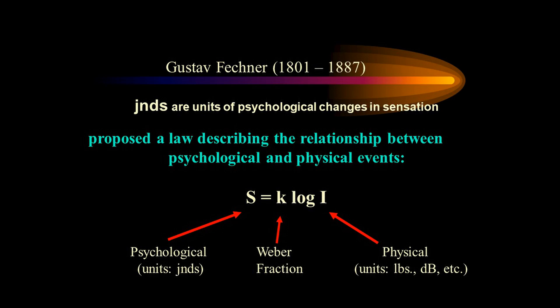S is psychological sensation. The K in the formula is the Weber fraction, and we then take the log of I — the logarithm of stimulus intensity. I'm not going to ask you to memorize Fechner's law or use it to calculate psychological sensations, but I want you to be able to look at this formula and see that on one side you have the psychological sensation, and on the other side of the equal sign you have the intensity of the physical stimulus — you are literally able to mathematically calculate the relationship between those two things. Gustav Fechner is a very famous, very important, and much revered psychophysicist.